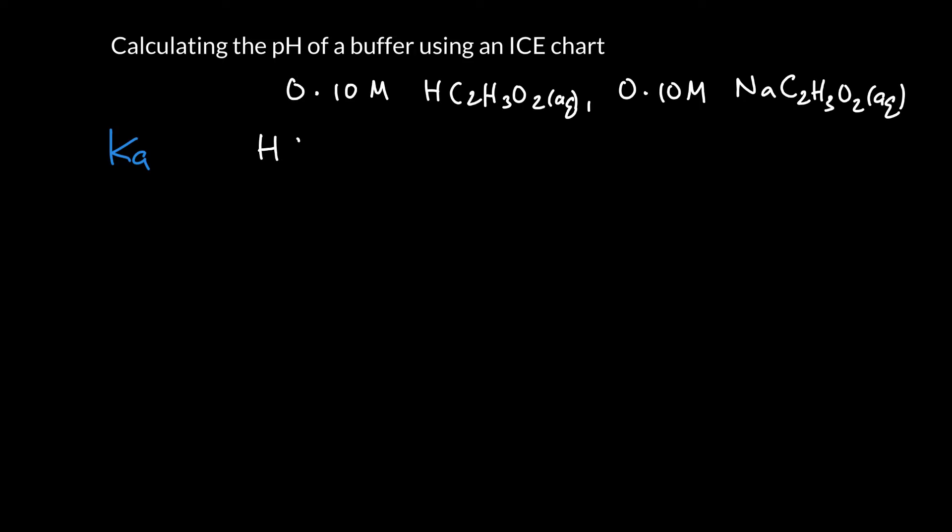So the Ka reaction, our acid is acetic acid, HC2H3O2, and what makes it an acid is that it can throw a proton at something like water. In a Ka reaction it has to be water, and it's going to protonate water and turn it into the hydronium. And what's left behind is the acetate ion.